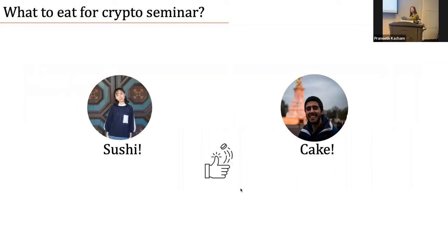So this is Joel and this is me. We are two organizers of the crypto seminar on Thursday, and we also need to order food. Since we have pizza today, we want to order something different. I want to order sushi, but he wants cake. We cannot convince each other, so we say, okay, let's toss a random coin. If the output is zero, let's order sushi. If the output is one, let's order cake.